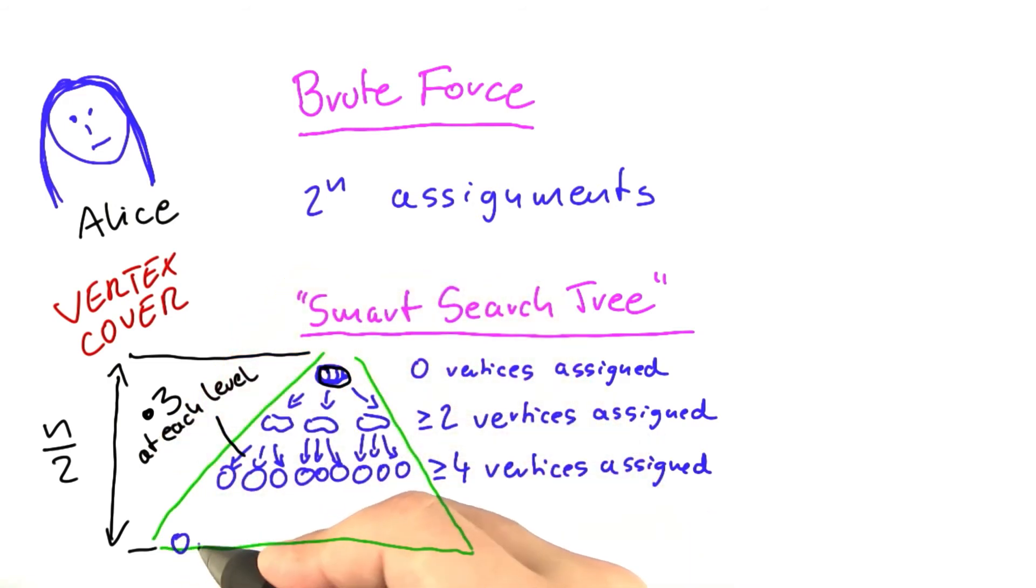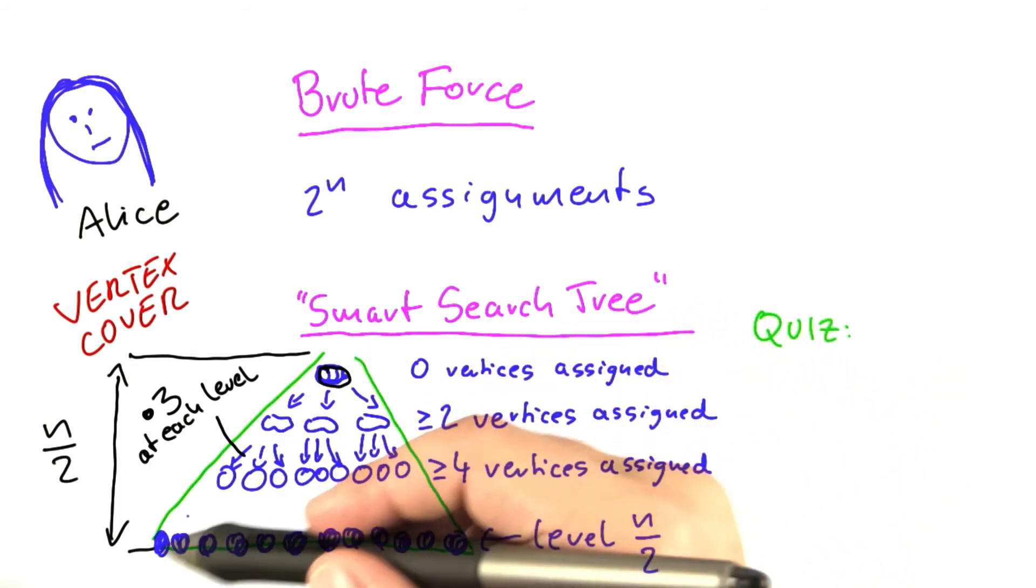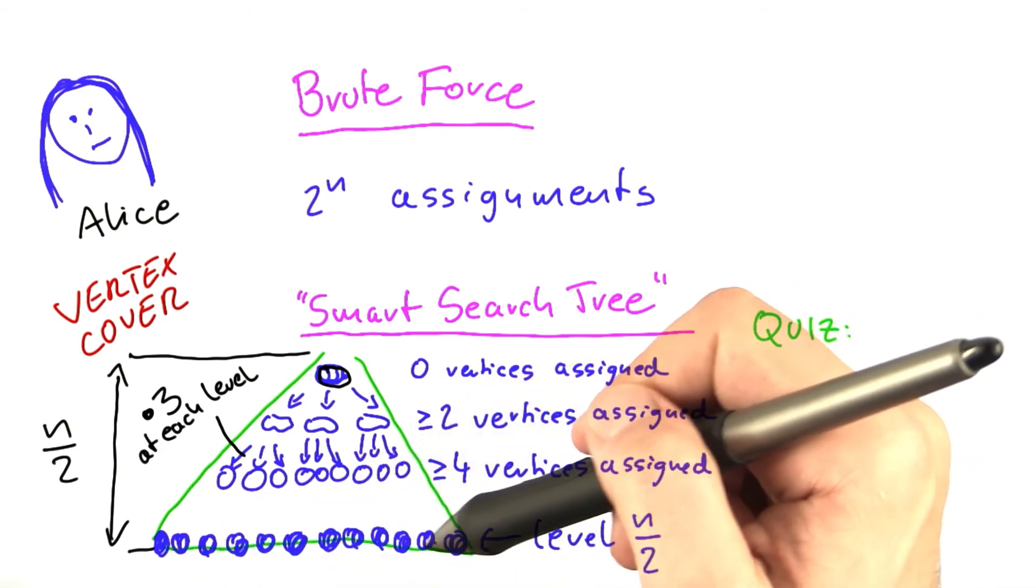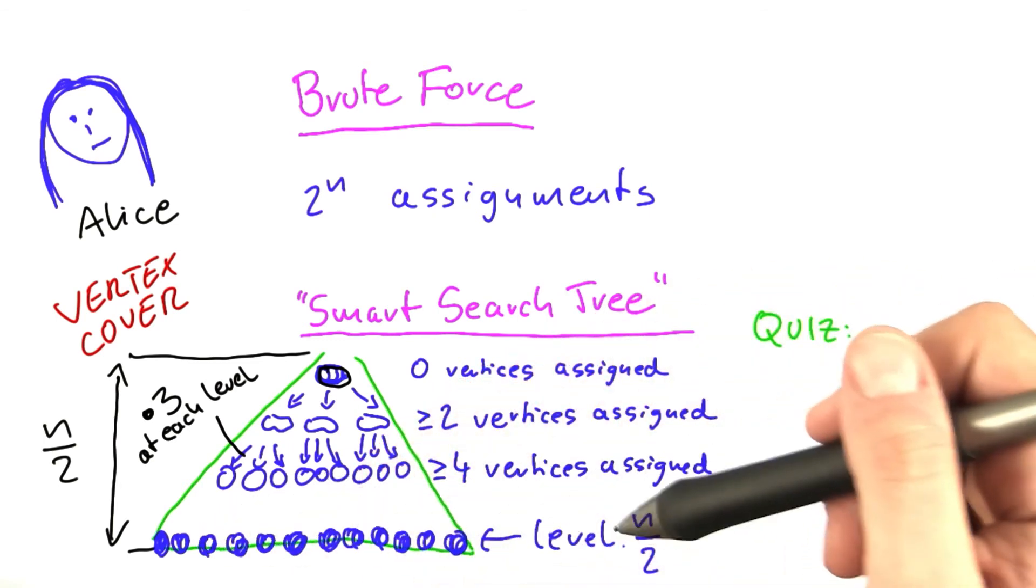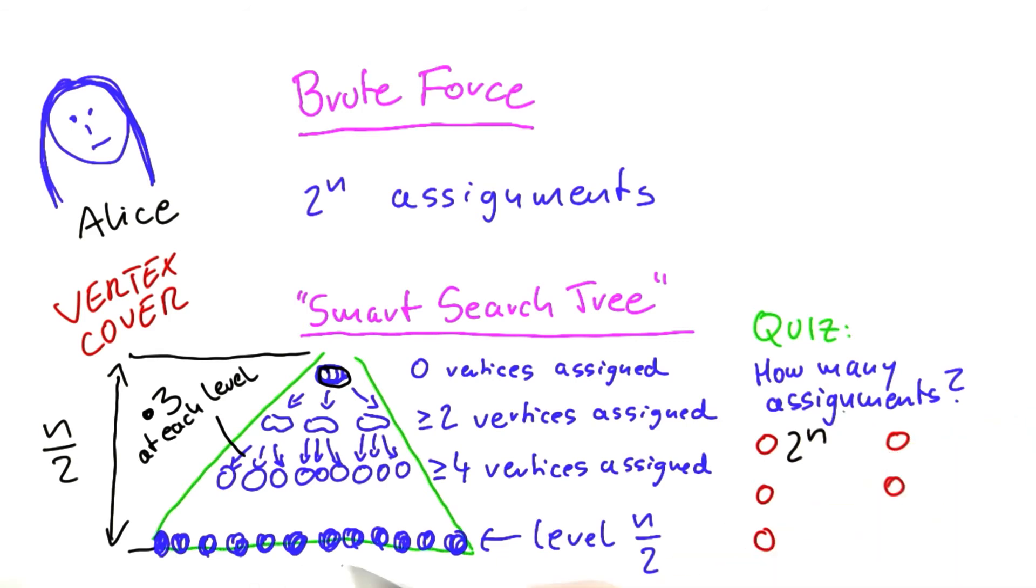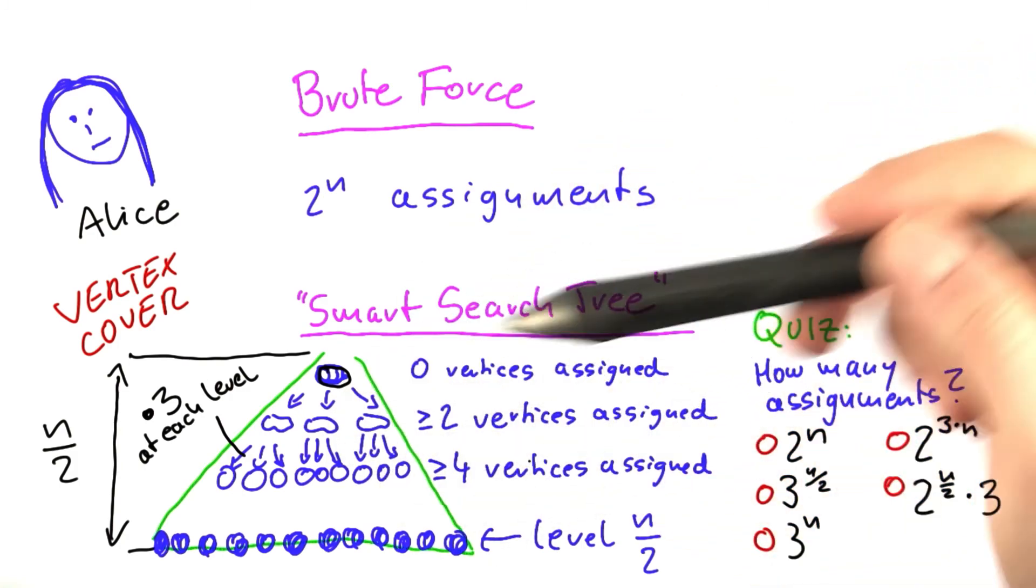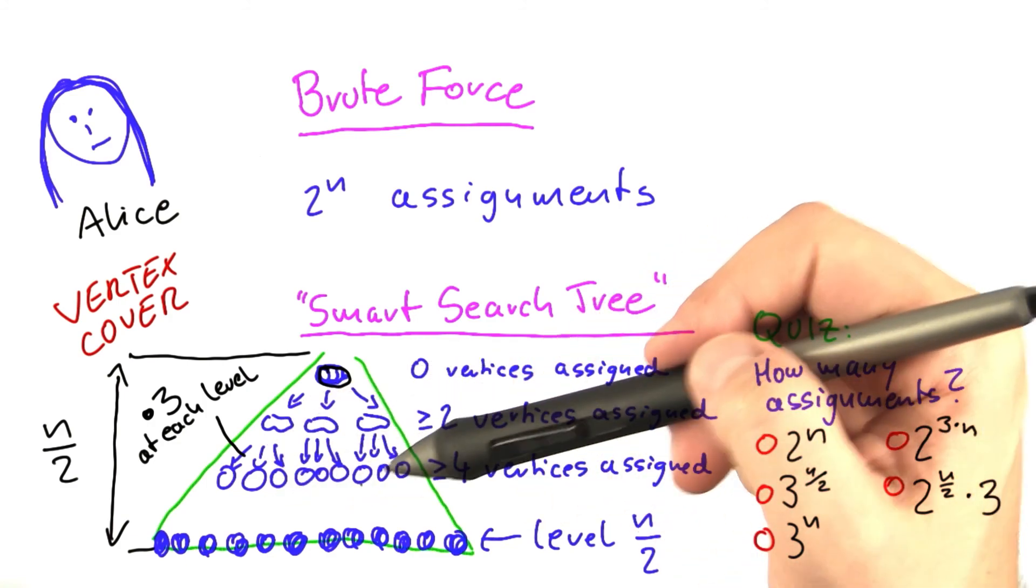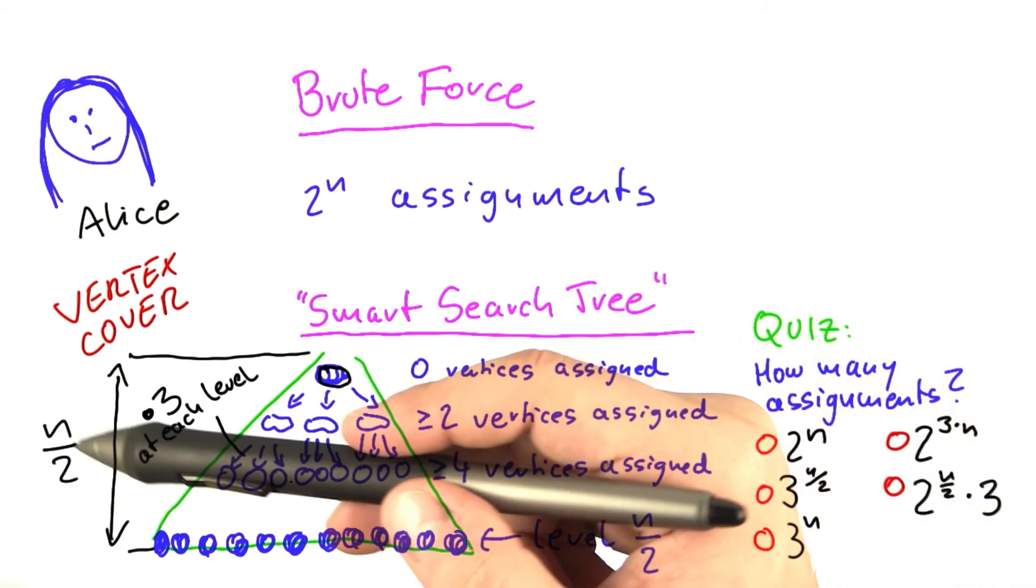Now my question for you is, if you look at the lowest level of the search tree, each of these one down here is an assignment of 0 and 1 to the vertices. What I would like you to think about is how many different assignments do we have at this level down here? Level n and a half. And you can assume for simplicity that n is an even number. So n half will be some integer. So I'll give you a number of choices. Is it 2 to the power of n assignments that we have down here? Is it 3 to the power of n half assignments that we have down here? Is it 3 to the power of n? Is it 2 to the power of 3 times n? Or is it 2 to the power of n half times 3? And you might have to think about this for a little bit, but just keep in mind the facts. The number of assignments that we are considering triples at each level, and we have n and a half levels.